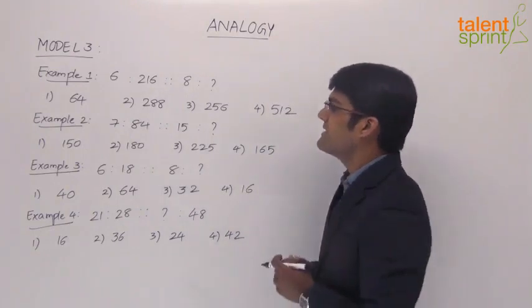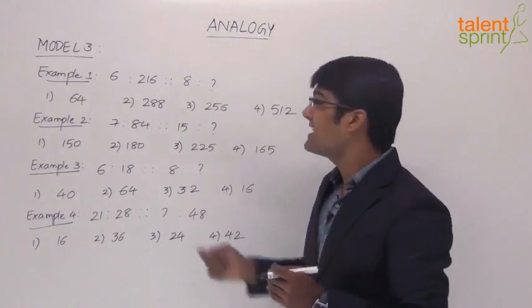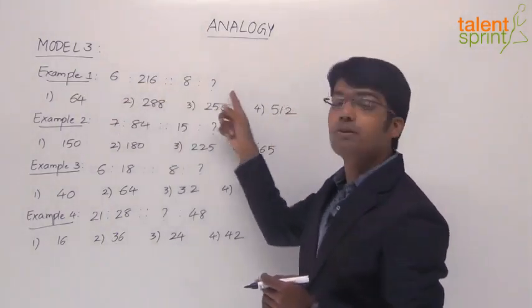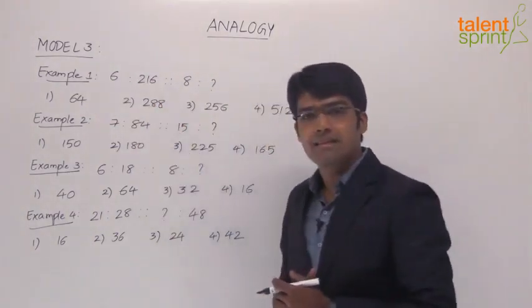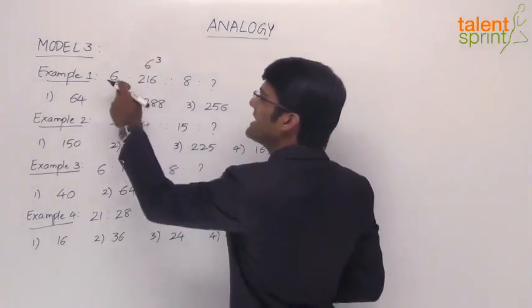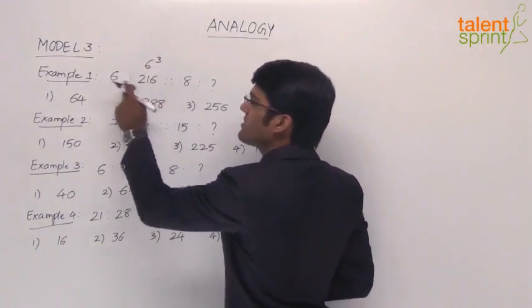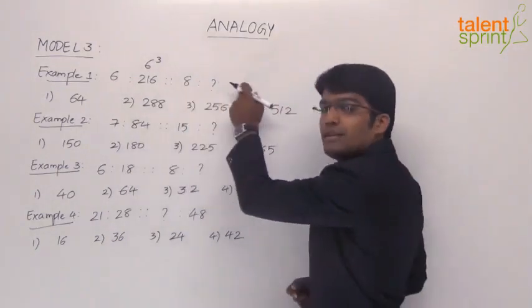The first example says 6 is to 216, then 8 is to what? If 6 is related to 216, then in a similar way 8 should be related to what? What is the relationship between 6 and 216? We know that 216 is 6 cube. So we are taking a number and then the cube of the number in the second position. So 6 is to 6 cube, then this should be 8 is to 8 cube.